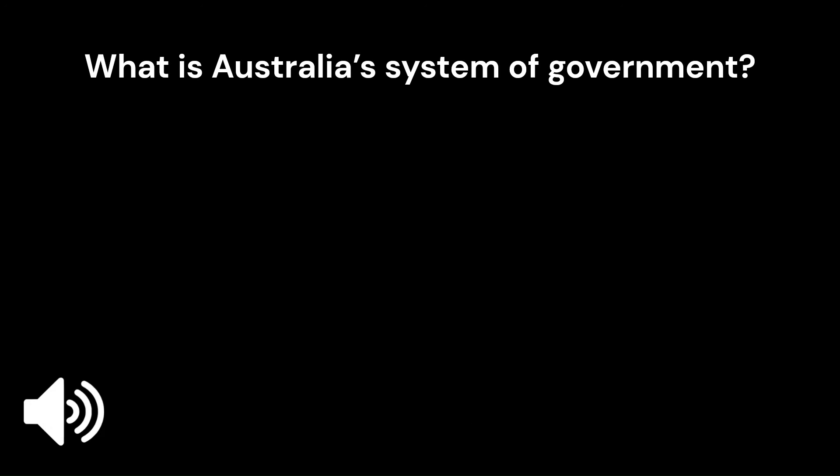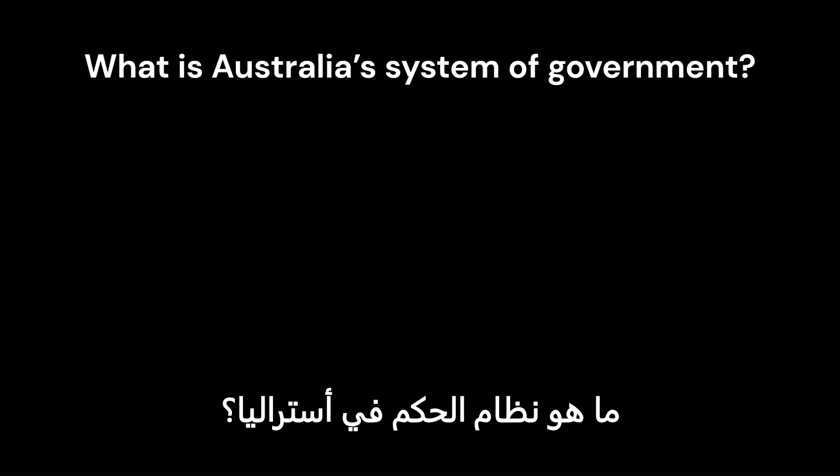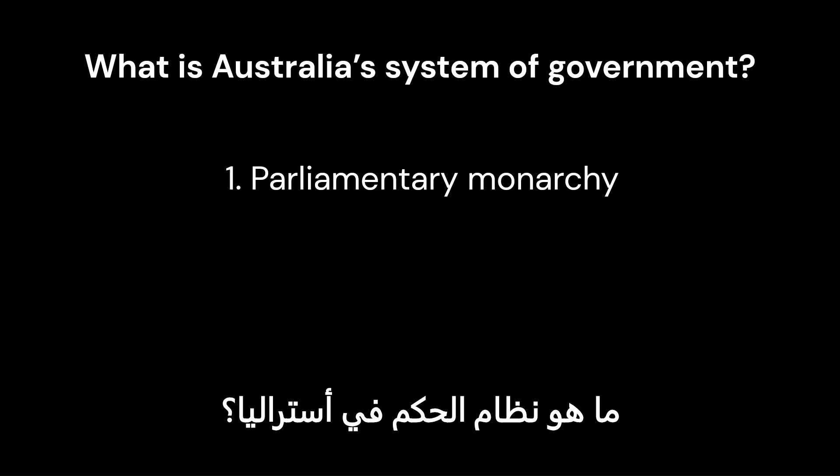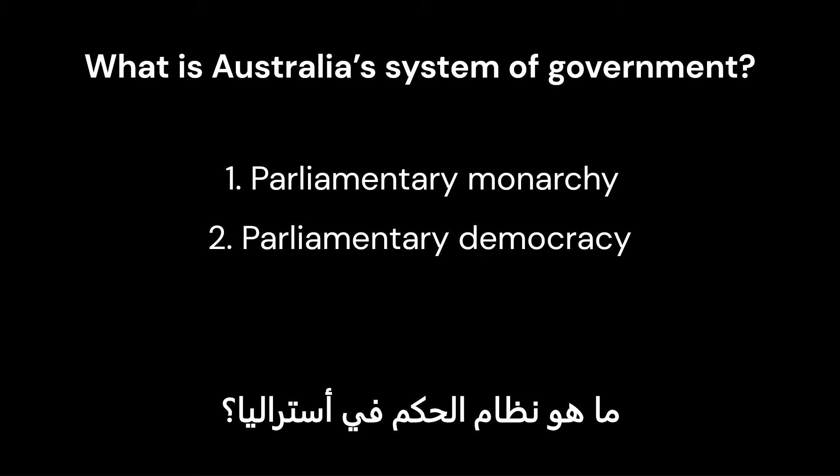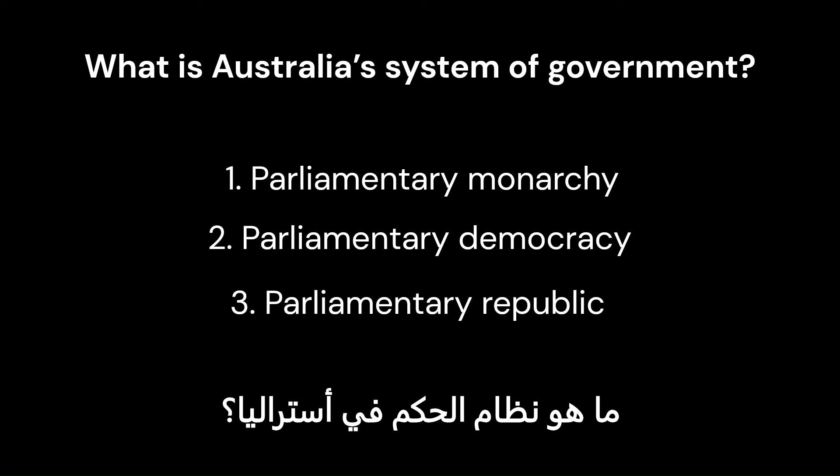What is Australia's system of government? 1. Parliamentary monarchy. 2. Parliamentary democracy. 3. Parliamentary republic.